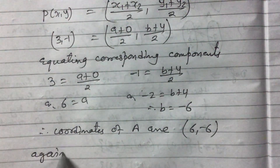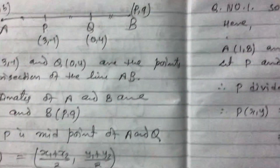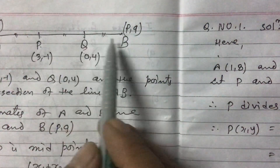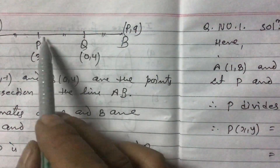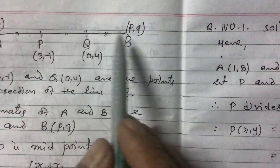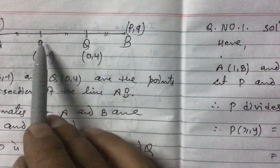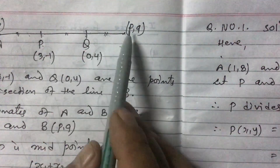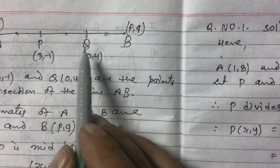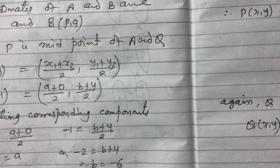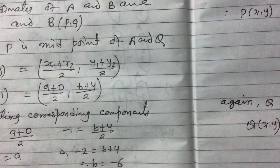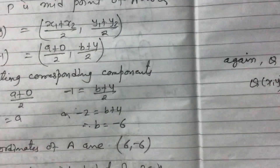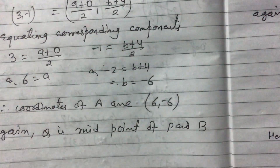Again, look at the figure. Now we need to find the coordinates of B. We take P, Q, and B. Since AP equals PQ equals QB, Q is the midpoint of P and B. So again we use the midpoint formula. X1, Y1 is P(3, -1) and X2, Y2 is B(p, q), and the midpoint Q(x, y) is (0, 4). Q is the midpoint of P and B.